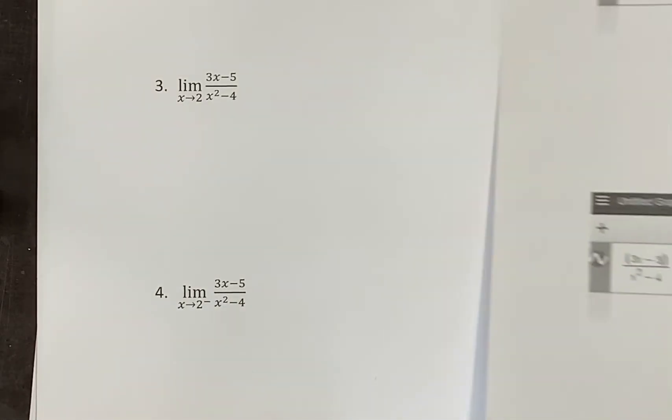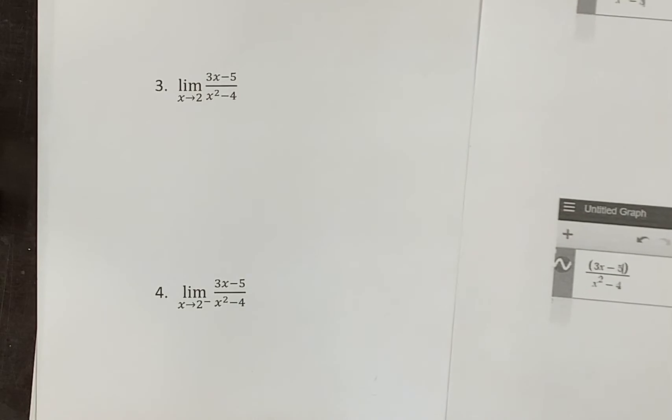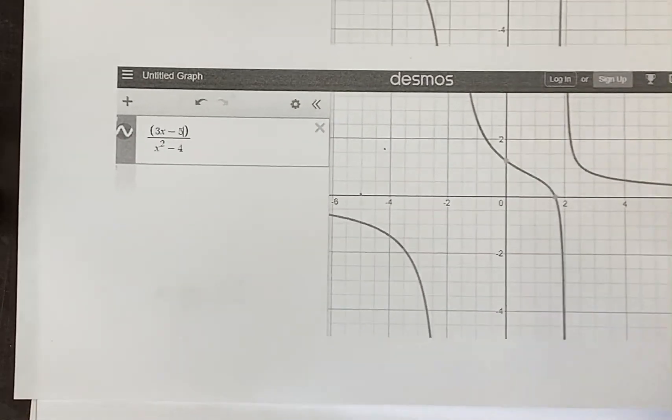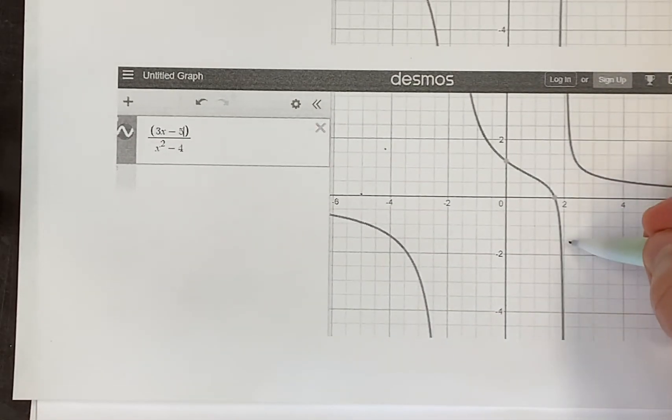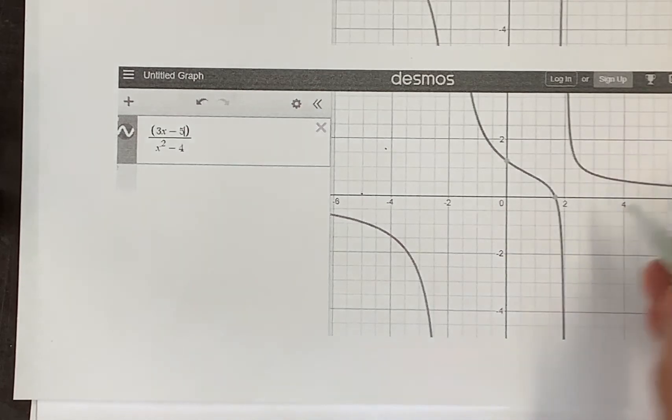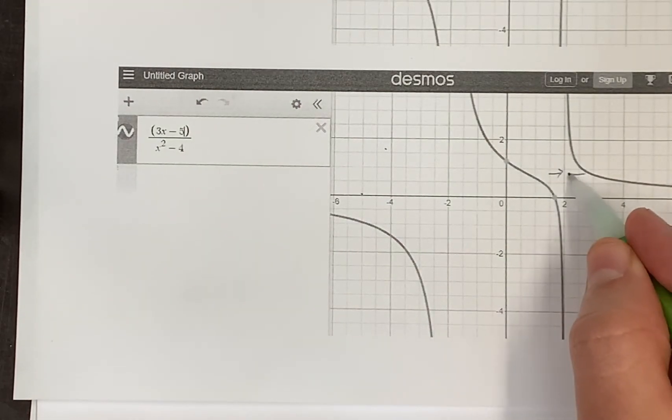Okay, what about this one? This was the interesting one. Limit as x goes to 2 here. Notice 2 is a vertical asymptote. That's really what we had going on. If you're asking from the left or the right, the answer's, I don't know.